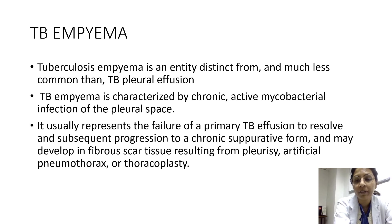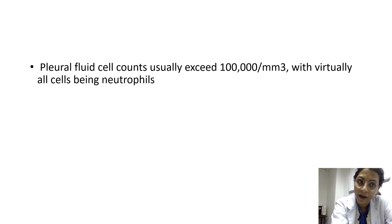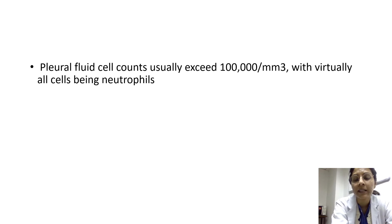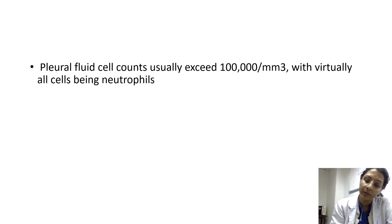Tubercular empyema usually represents the failure of a primary TB effusion to resolve, progressing to a chronic suppurative form. It may develop in fibrous scar tissue from pleurisy, artificial pneumothorax, or thoracoplasty. On aspiration, frank pus or a highly turbid fluid is obtained, which is difficult to aspirate with a small bore needle. Cell counts exceed 100,000 with virtually all cells being neutrophils — unlike TB pleural effusion, where lymphocytes predominate.